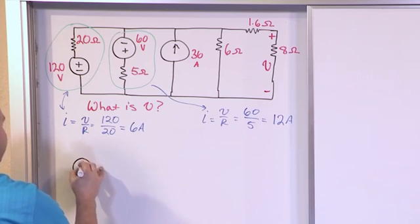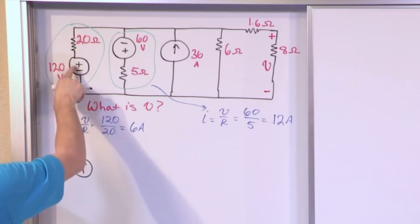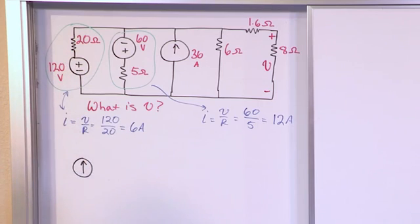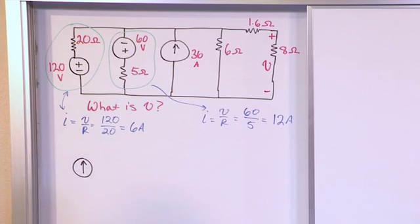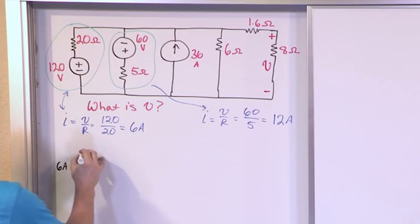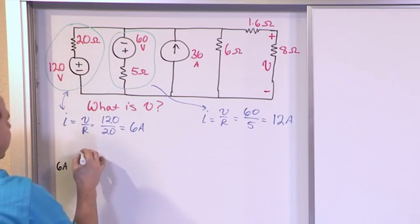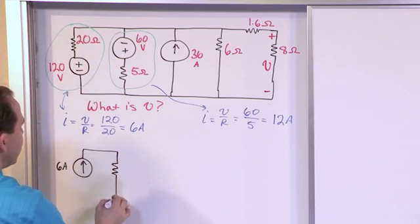It's going to be up because it has to match the polarity of what I'm transforming from. This has current coming out this way because the positive's on the top. So this is going to be 6 amps and this 20 ohm resistance is now in parallel with...